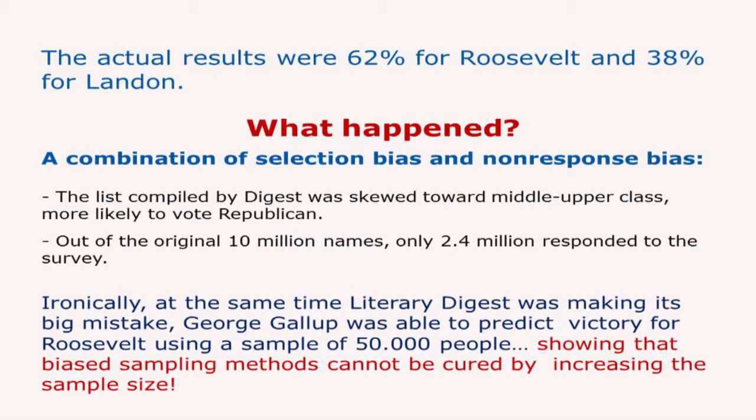What happened was a combination of selection bias and non-response bias. The list compiled by the Digest included mostly middle and upper class — at the time, having a telephone at home was not common in the United States, which virtually excluded the lower class. These middle and upper class people were more likely to be Republican than Democrat. Additionally, out of the original 10 million names, only 2.4 million responded — non-response bias. Ironically, at the same time, Gallup was able to predict the correct result with only 50,000 people, showing that selection bias cannot be corrected by increasing the sample size.